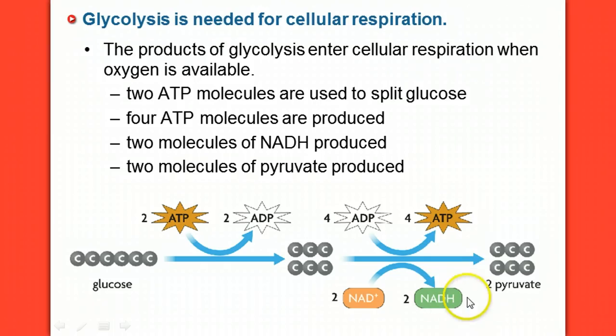NADH gets made, but once that NADH takes on the electrons, four ATP get made. So then we're left with these two pyruvates. Where does the pyruvate go after this?